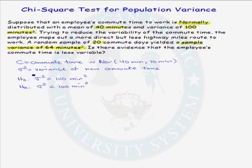Sigma squared is the variance of the new commute time for his new route to work. Our null hypothesis for this problem will then be that the variance, sigma squared, is equal to 100 minutes squared compared to the alternative that sigma squared, the variance, is less than 100 minutes squared.